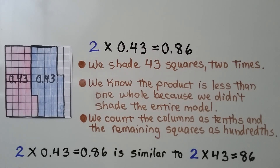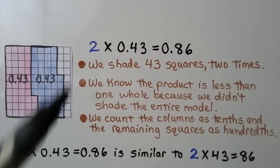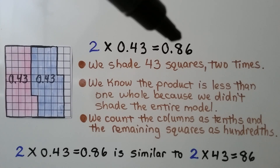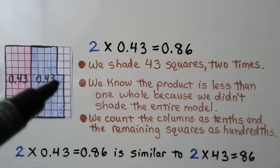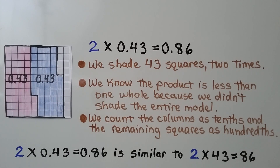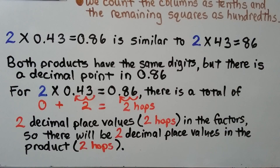Here we have two times forty-three-hundredths. We shade forty-three squares two times. We know the product is less than one whole because we didn't shade the entire model. We count the columns as tenths — four, five, six, seven, eight — so we put an eight in the tenths place. Then we count the remaining squares as hundredths: one, two, three, four, five, six. That gives us eighty-six hundredths. Two times forty-three-hundredths is equal to eighty-six hundredths.